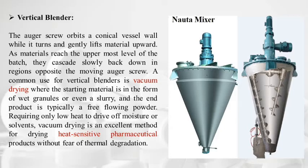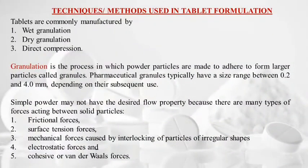Tablets are commonly manufactured by wet granulation, dry granulation, or direct compression. Granulation is the process in which powder particles are made to adhere to form larger particles called granules. Pharmaceutical granules typically have a size range between 0.2 to 4 mm depending on their subsequent use. A simple powder may not have the desired flow properties because of forces acting between solid particles.